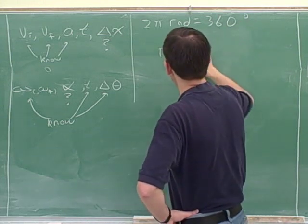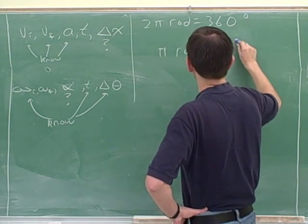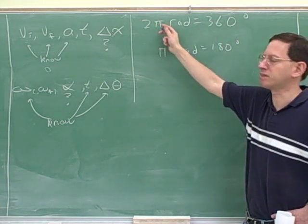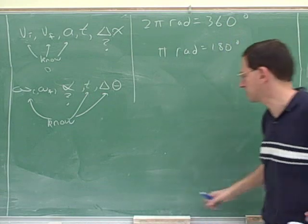If you wanted to, you could have said that pi radians is 180 degrees. Either of those would work. I think this is a little bit easier to remember. We should know that 2 pi is a complete cycle, and that's 360 degrees.